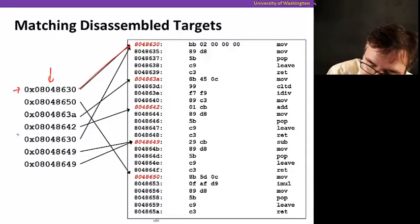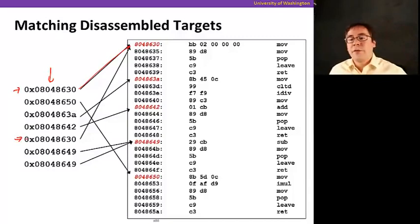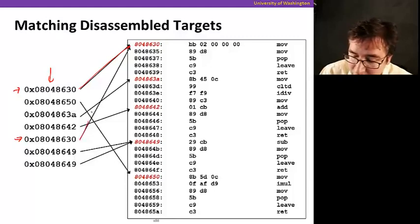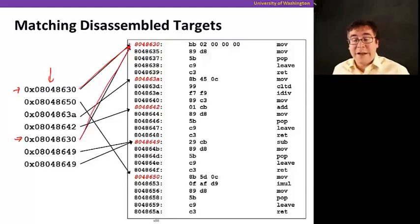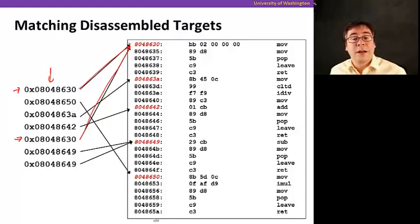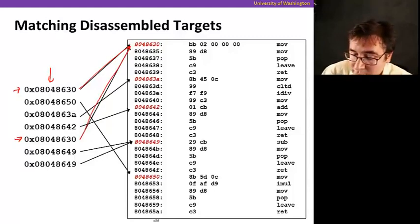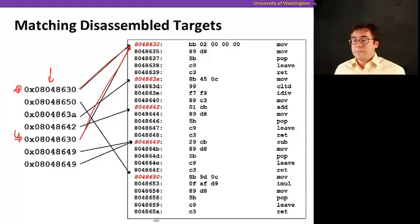Note that we have some repeated entries in the jump table. Some cases had fall-through or were not explicitly defined. For example, value four has to go to the default case, so it points there. The same thing is true for value zero.